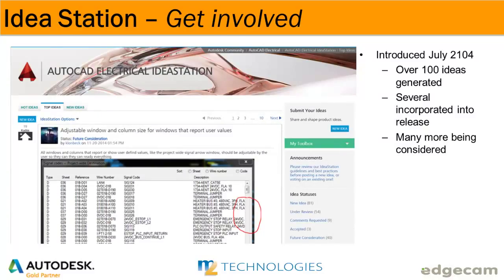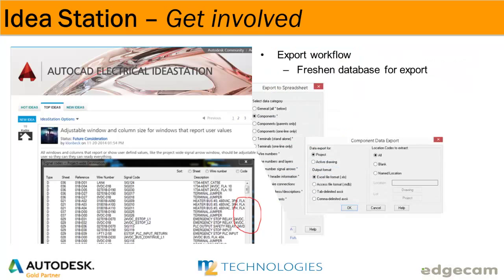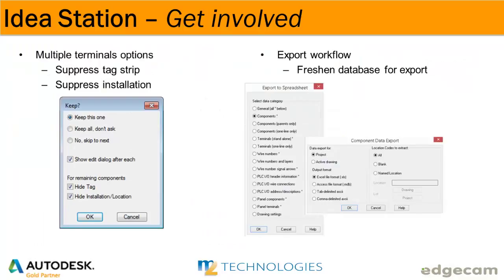With a desire to reach out to more users and understand their needs and pain points, Autodesk launched an AutoCAD Electrical Idea Station in July of 2014. Customers are able to propose improvements as well as vote on ideas from others. The product team uses this information to engage the proposer, understand the problem, and rank ideas for inclusion in future releases. Here are a few of the ideas Autodesk implemented in the 2016 release.